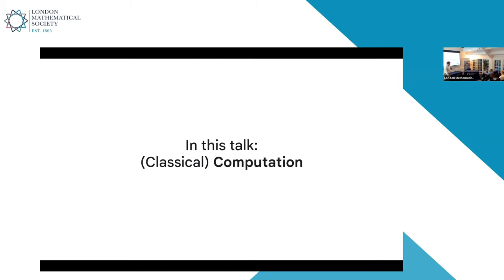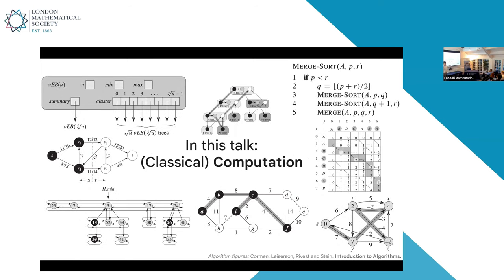What are we going to talk about today? As the title implies, we're going to talk about classical computation. When I say classical computation, I want you to think about the kinds of things you might typically see in an undergraduate course in a computer science degree on algorithms and data structures — all of these interesting ways to organize information, to transform information, to solve challenging problems specified over abstract structures. So things like sorting, searching, pathfinding, dynamic programming, and all these sorts of things.